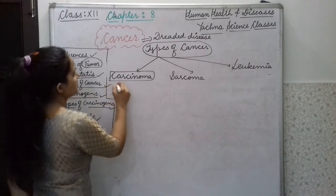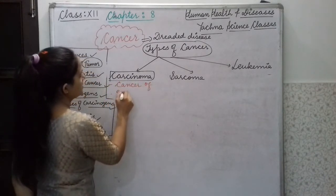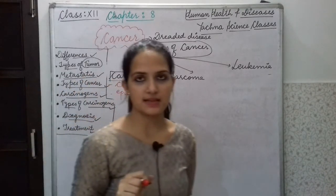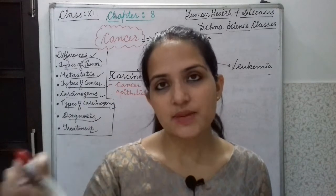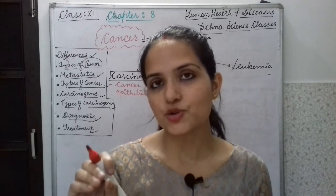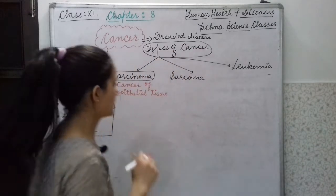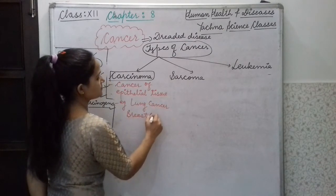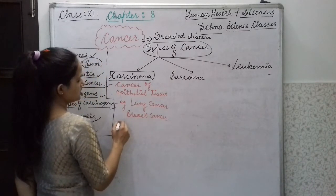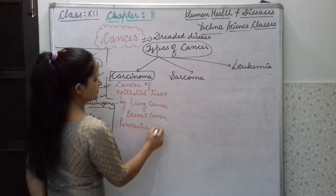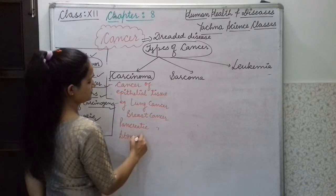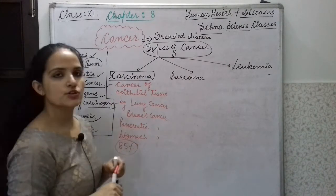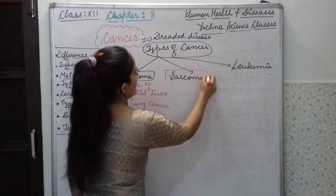Carcinoma is the cancer of epithelial tissue. Doctors refer to it by the specific organ affected — for example, lung cancer, breast cancer, stomach cancer, or pancreatic cancer. These are all types of carcinoma because those organs contain epithelial tissue. In fact, 85 percent of cancers are carcinoma.